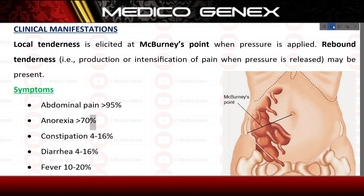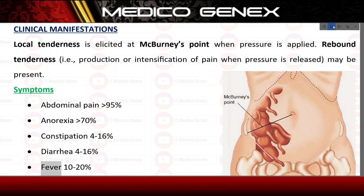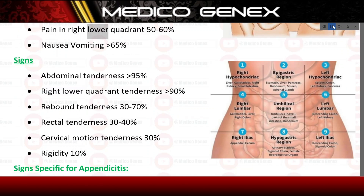Anorexia, 70%. Constipation, 4–16%. Diarrhea, 4–16%. Fever, 10–20%. Pain in the right lower quadrant, 50–60%. Nausea and vomiting, 65%.